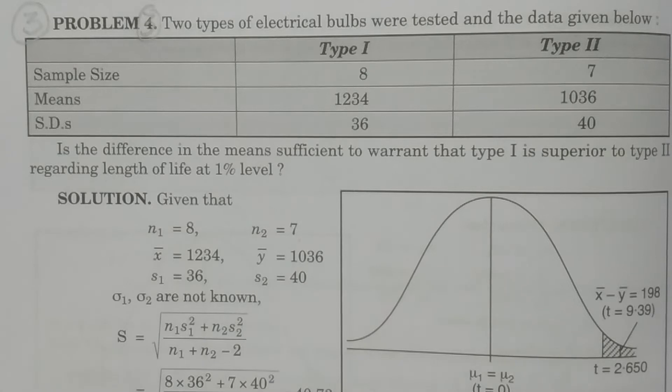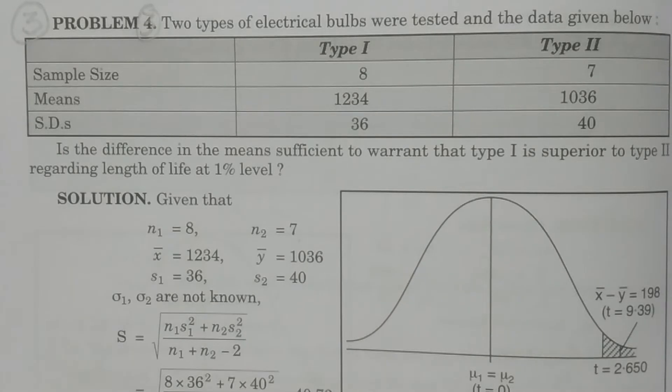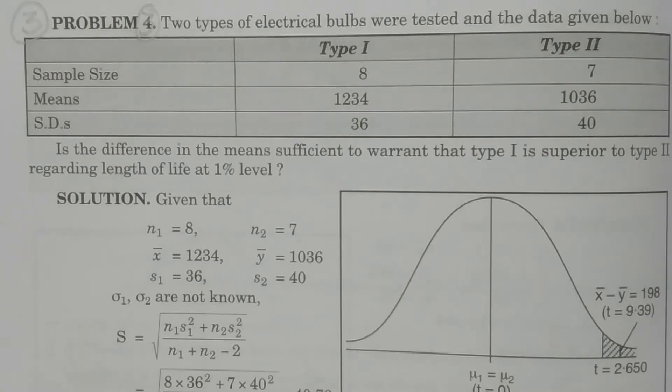You see the size of the sample, then you decide whether it is a small sample or large sample. Large sample means the sample size must be greater than 30. Otherwise, if the sample size is less than or equal to 30, it is a small sample.